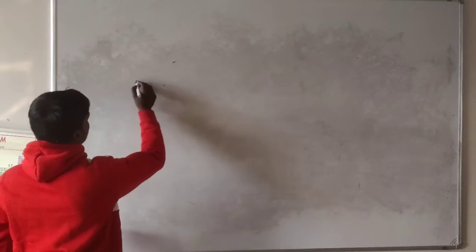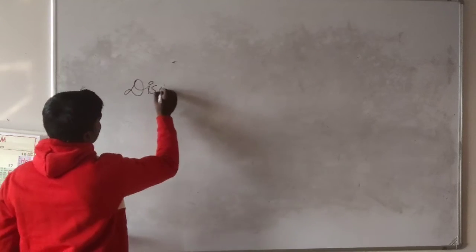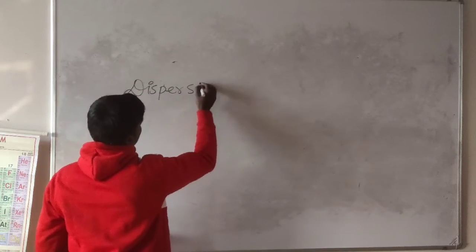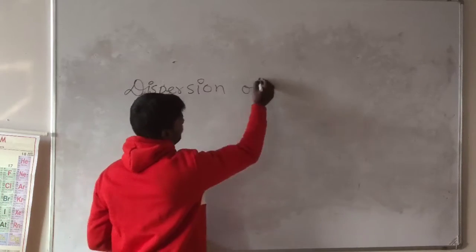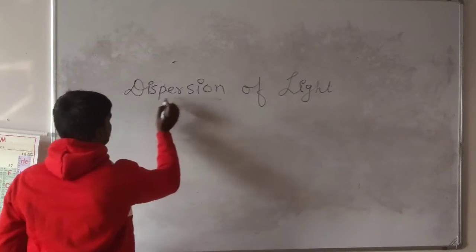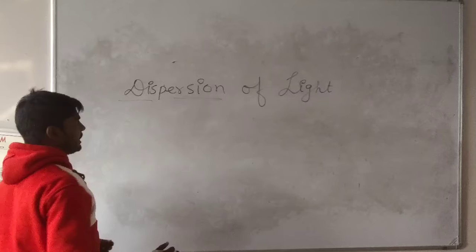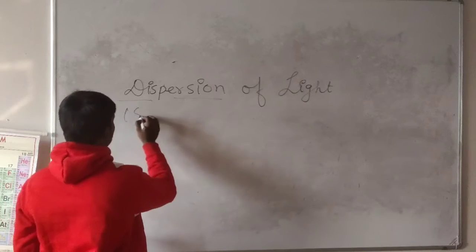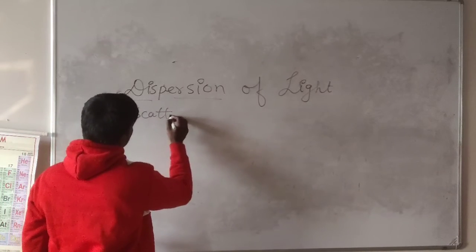So today's topic will be dispersion of light. First, what is the meaning of dispersion? The meaning of dispersion is scattering.